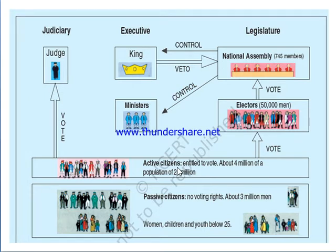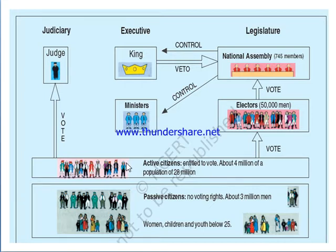Three conditions were required to get voting power. First, they should be men. Second, they should be above 25 years of age. Third, they should be able to pay a tax equivalent to three days' wages. This meant indirectly only rich people could get voting power, since only they could afford to pay. So women, those below 25, and the poor had no voting rights.